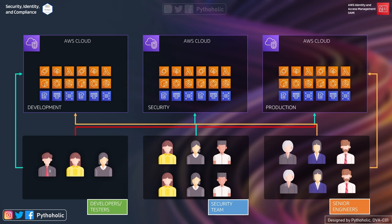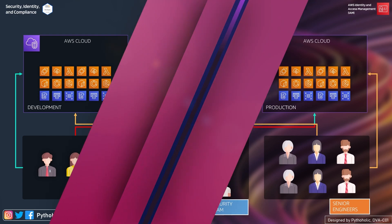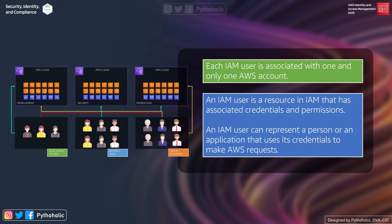Managing more than 100 accounts and governing them in a single organization changes the whole outlook of how we manage it. IAM can provide you with features to manage access for users with specific roles and responsibilities. You may ask whether AWS IAM alone is sufficient to manage all AWS accounts in an organization — the answer is no. Services like AWS Organizations help manage multiple accounts, but the underlying permissions are still managed by IAM.